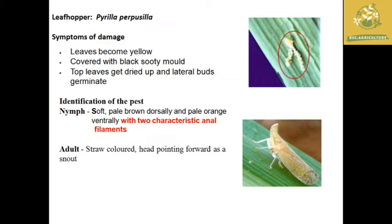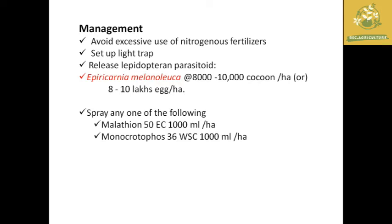The next pest is the leaf hopper, with the scientific name Pyrella perpusila. The damage symptoms include yellowing of leaves and leaves becoming covered with pseudomod, which causes secondary infection by plant pathogens. The top leaves get dried and lateral buds germinate in the early stages. For identification: nymphs are soft and pale yellow, dorsally pale, with two characteristic anal filaments. The adult is straw-colored with a head pointed forward. For management, avoid excessive use of nitrogen. Use light traps for monitoring, release lepidopteran parasitoid Epricania melanoleuca at 8,000 to 10,000 cocoons per hectare, or spray Malathion or Monocrotophos as a final option.